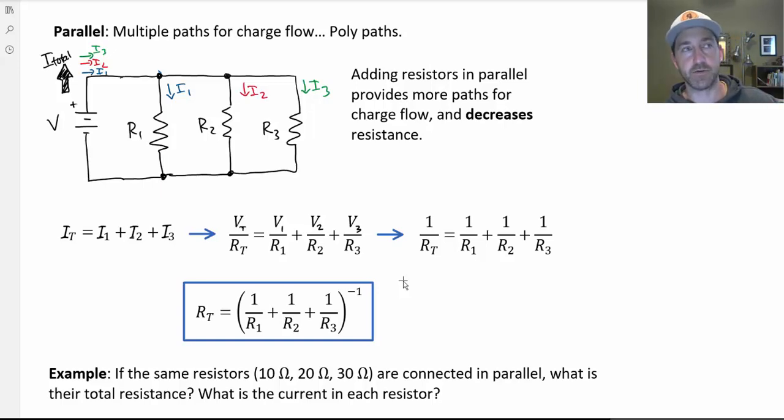And every time you add a new branch, you don't deter charge flow from the other. The charge flow through the first and second resistor would remain unchanged. But every time I add a new path, the charge flow from the battery has to compensate and push more charges out, which can drain batteries pretty quick. If you have more things hooked up in parallel, it's not going to last as long.